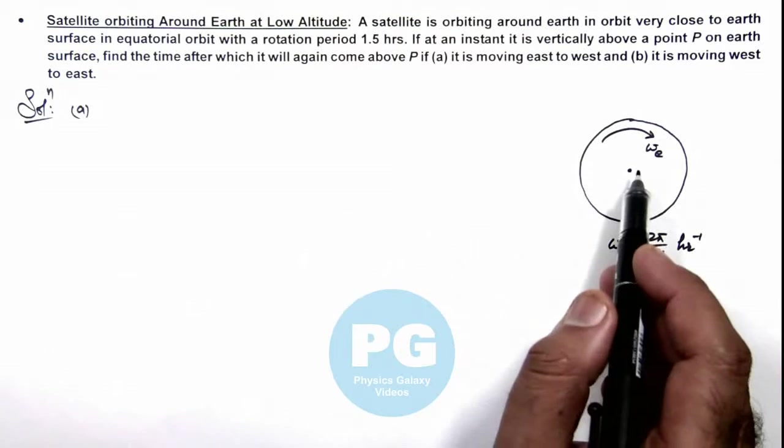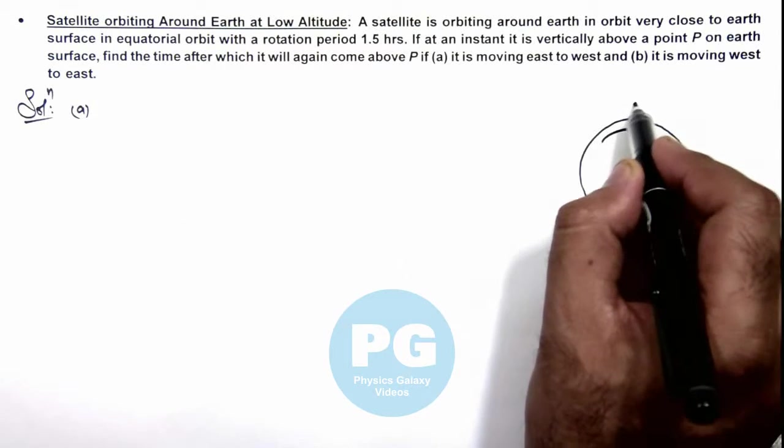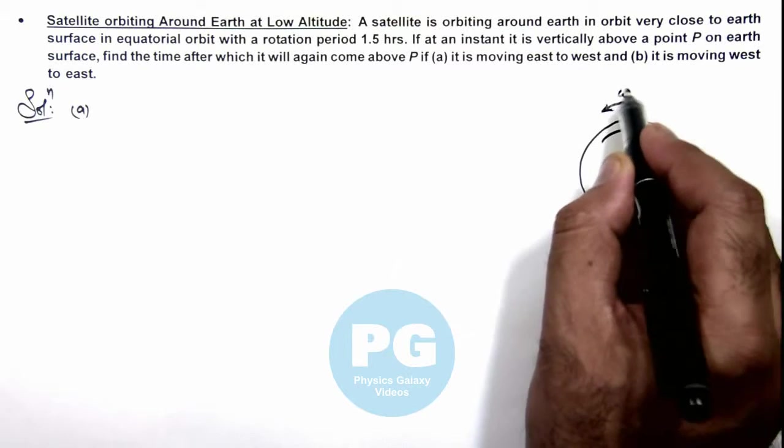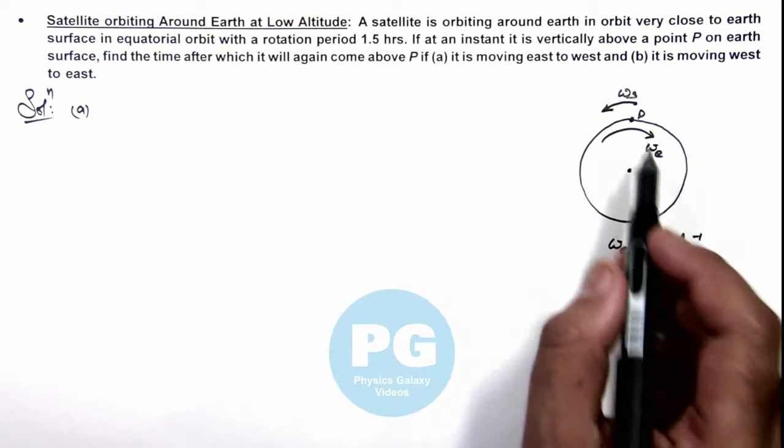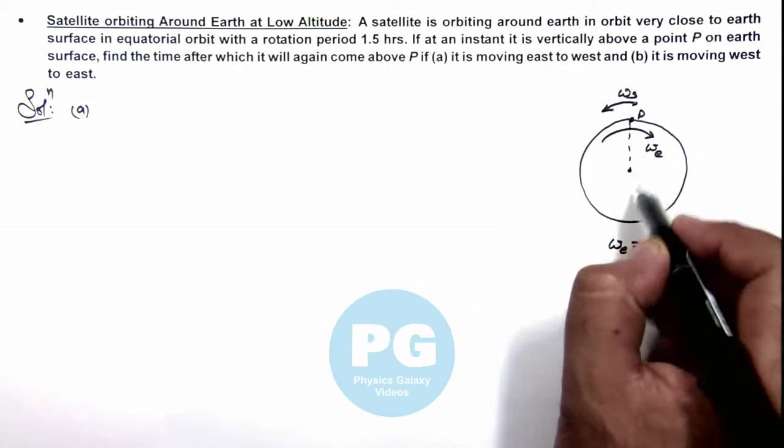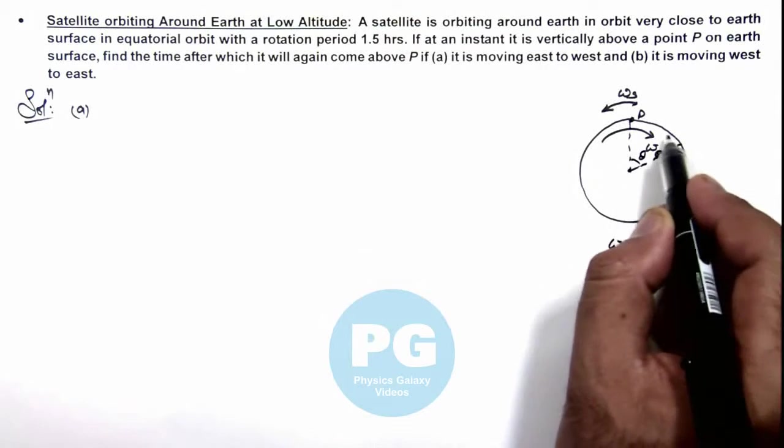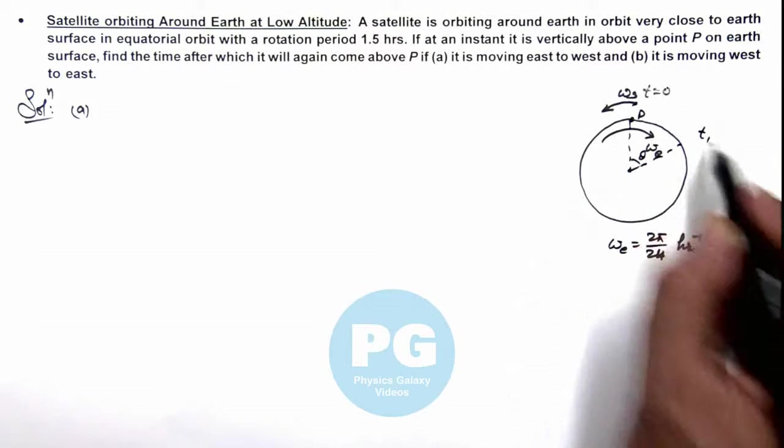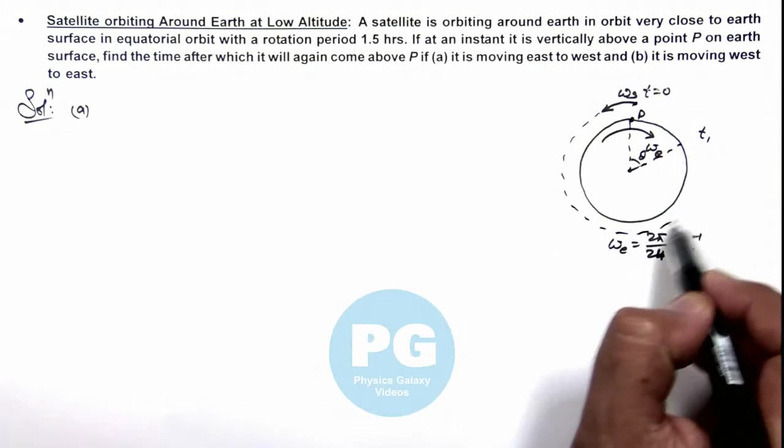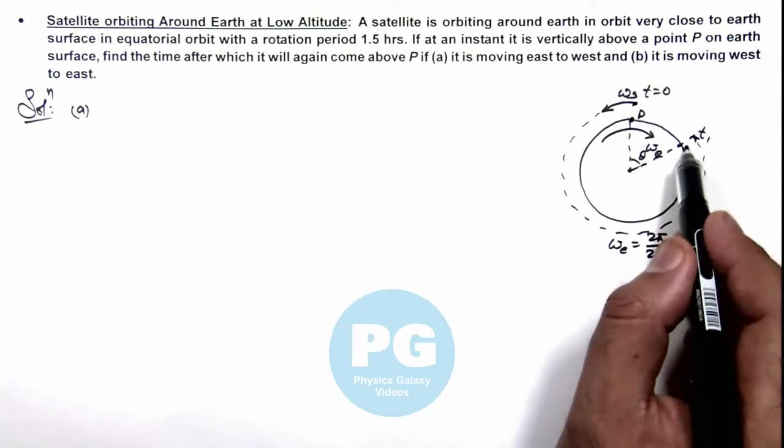So in this situation here we can write if at a point P above the Earth, if this is the satellite moving in opposite direction at speed ωₛ, then we can say again the satellite will appear above point P when Earth rotates by an angle θ. And in the same time, say if it is t=0 and this time is t₁, the same time the satellite will rotate by an angle 2π-θ and reaches the point which is directly above P.